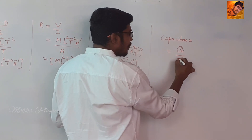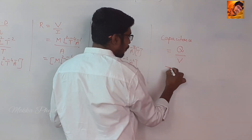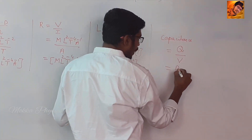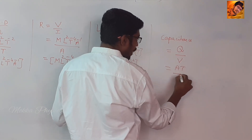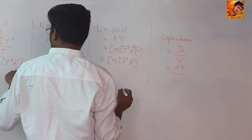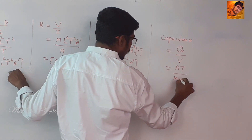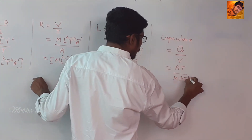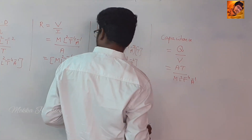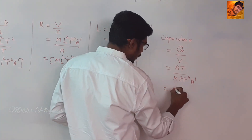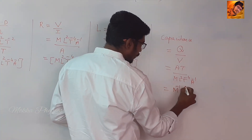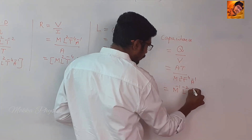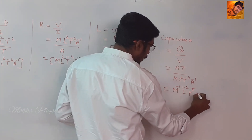Capacitance formula: Q by V. Q is I times T — ampere into time. Divide by voltage dimension M L² T⁻⁴ A⁻¹. Working it out gives M⁻¹ L⁻² T⁵ A².